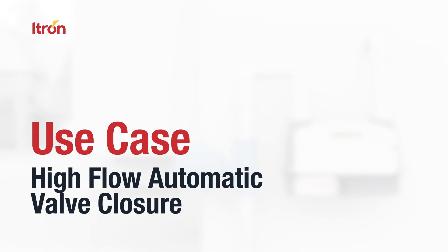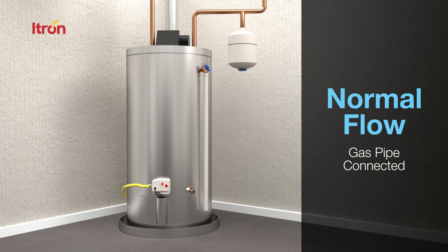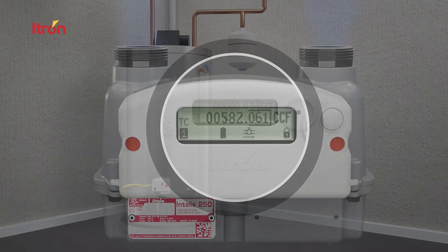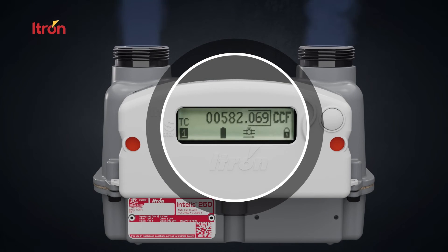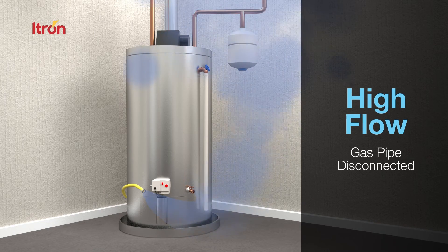This use case demonstrates how the valve will automatically shut off gas flow once it is above the high flow threshold. For example, a homeowner is changing out a defective hot water heater. Prior to removal, gas is flowing at a typical rate through the meter. The valve is open. The homeowner disconnects the line without turning off the gas, and the gas line is left open.